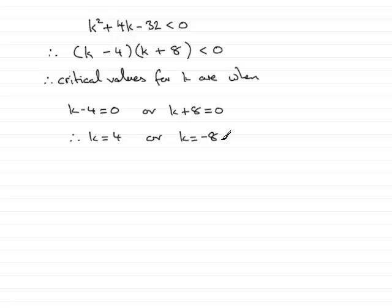Now that I've got these critical values, what I'm going to do is draw a sketch of the graph of y equals k squared plus 4k minus 32. So I'll just draw that over here, I'll have our axis like so.